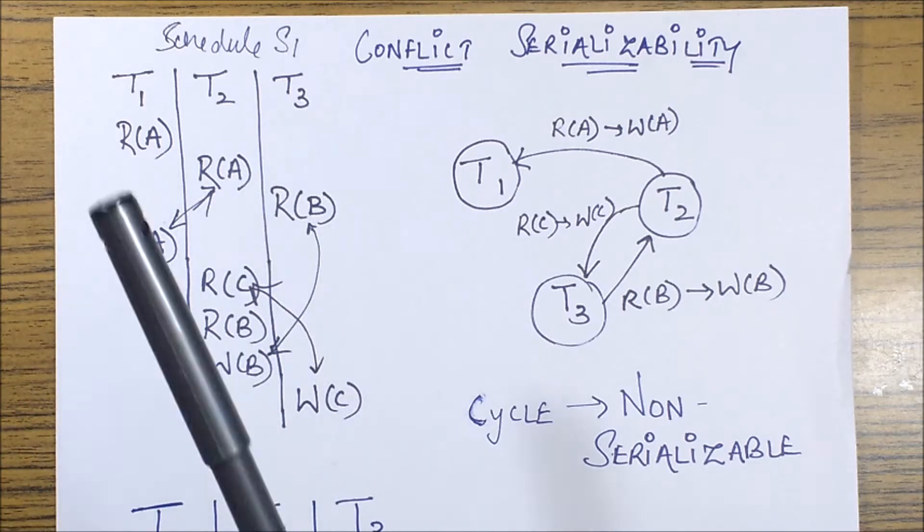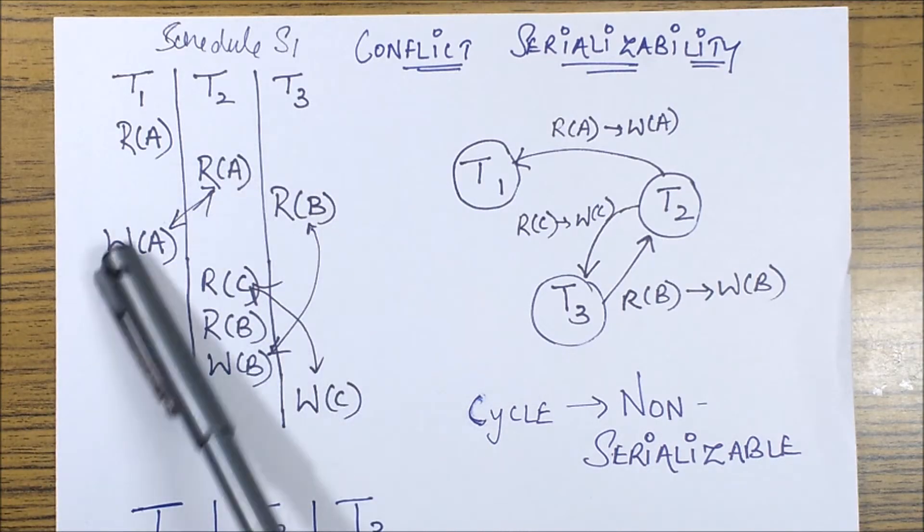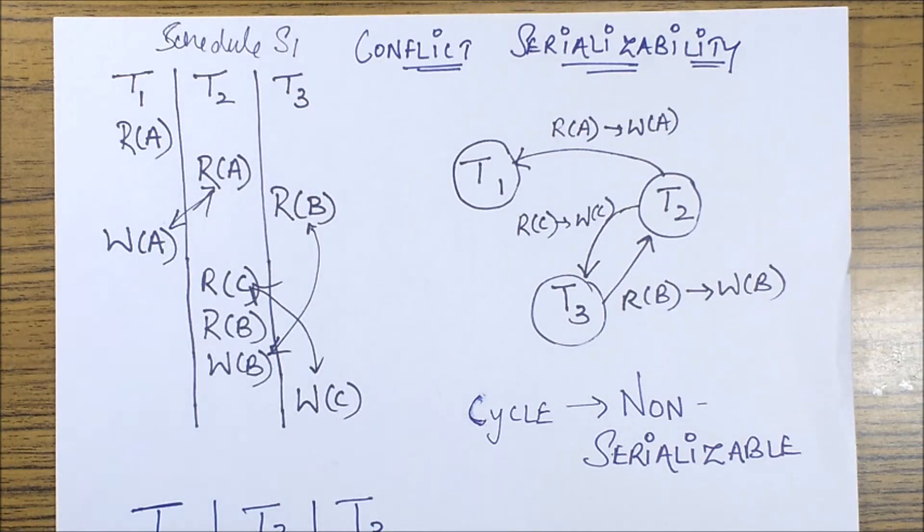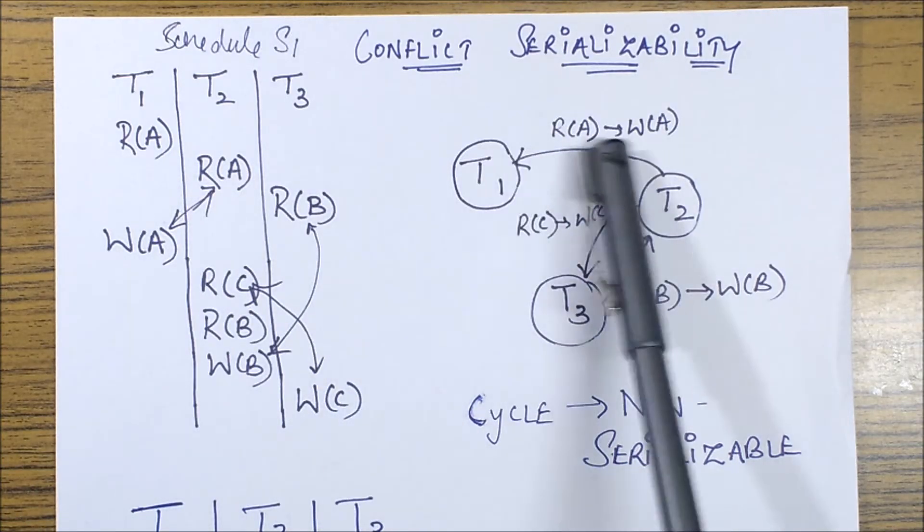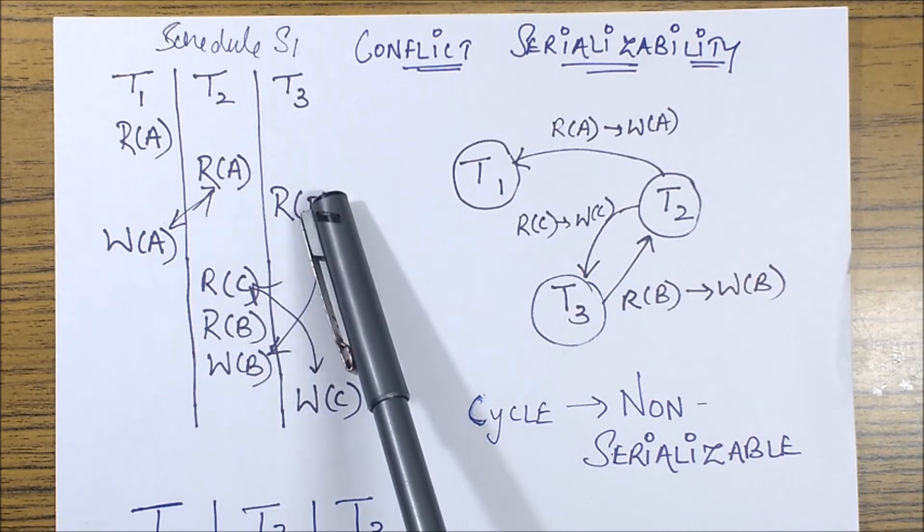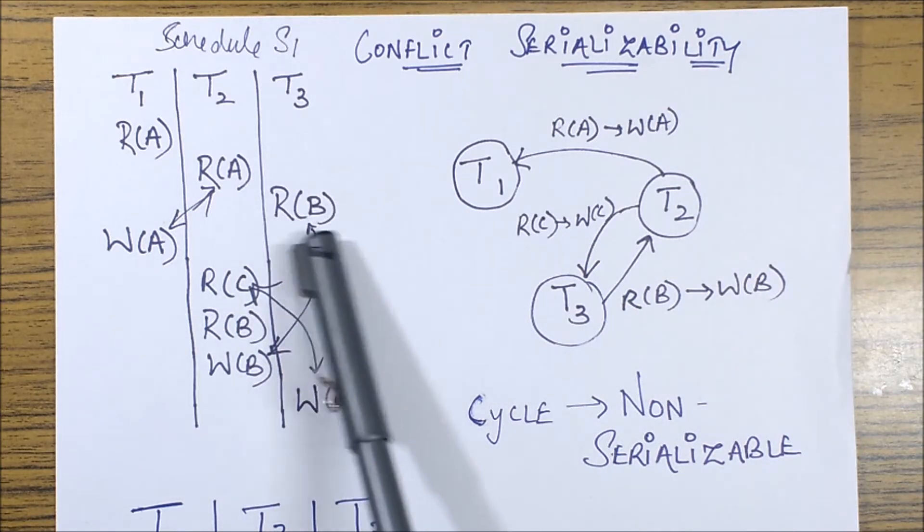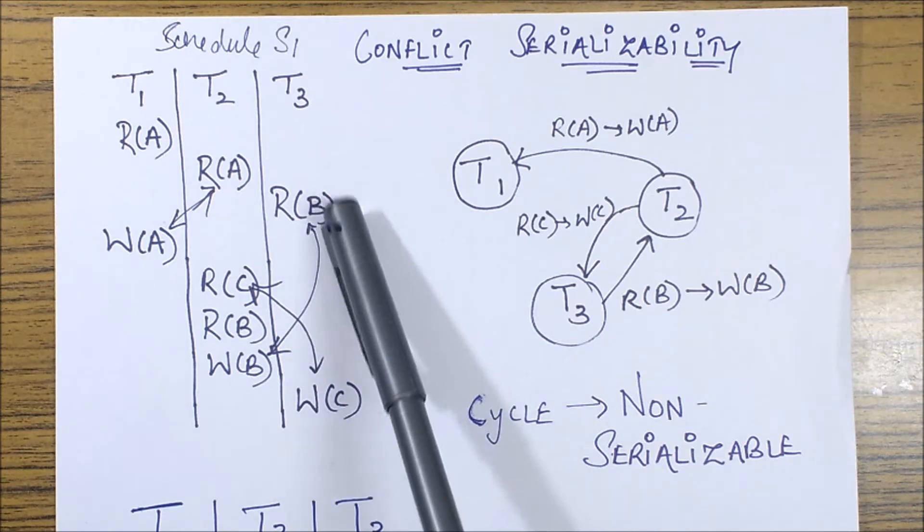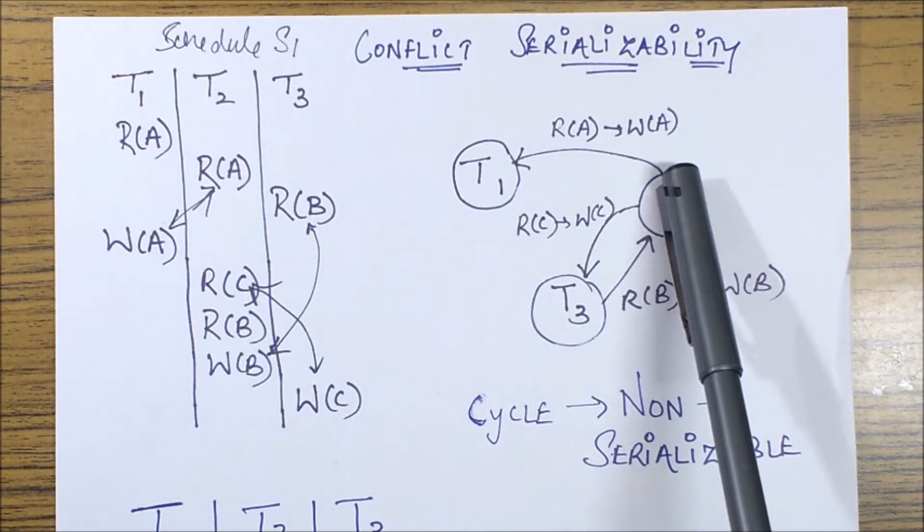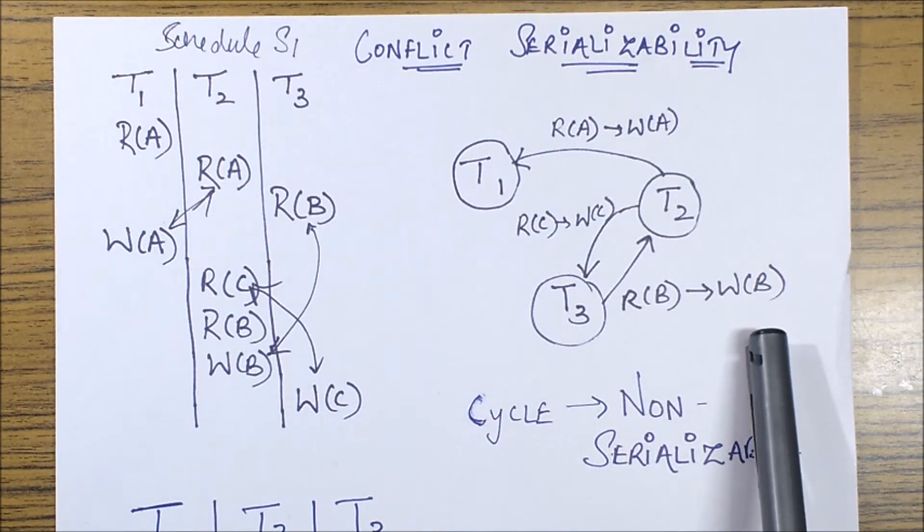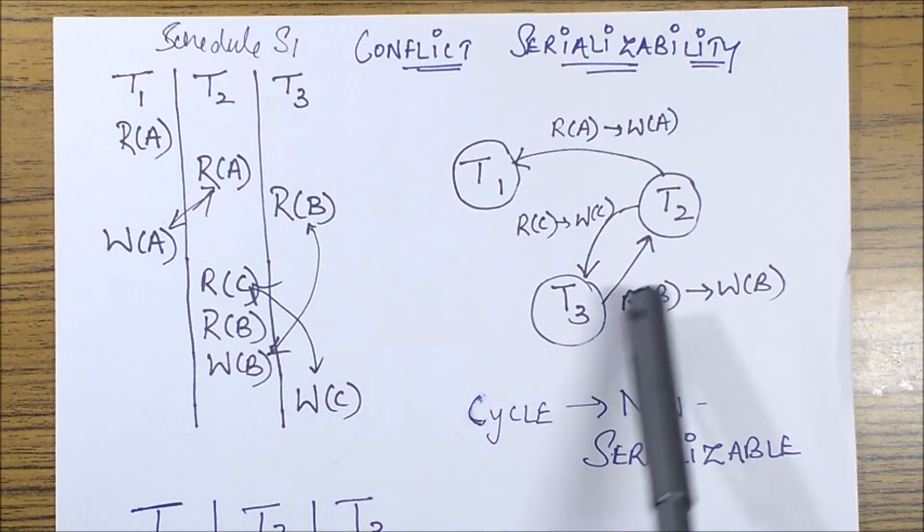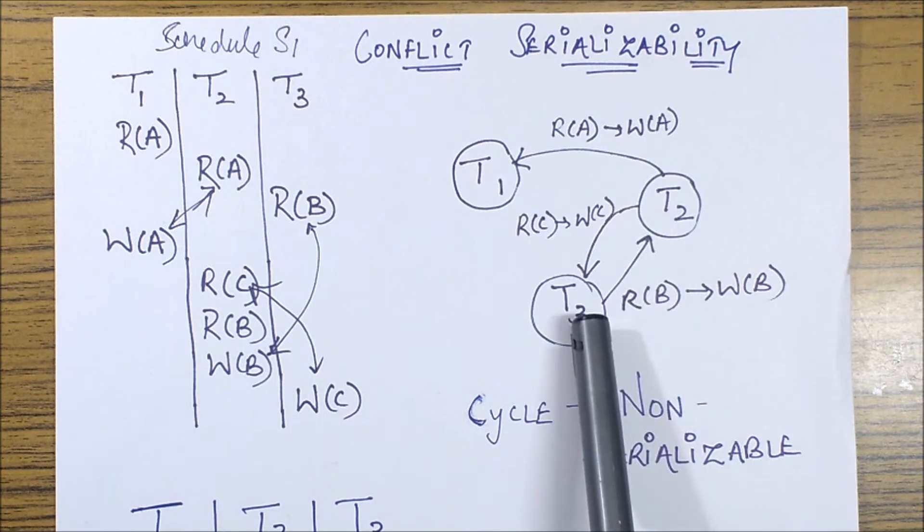How do we mark them? First of all let's start with this. So the order will be from T2 to T1 because T2 this read A is happening before this write A. So T2 to T1 I label it with the same operation. Then the next one is this because next operation is RB. So this is happening from T3 to T2, labeled with the same operation, and then finally this one which is happening from T2 to T3.